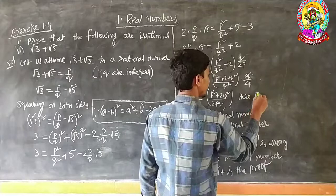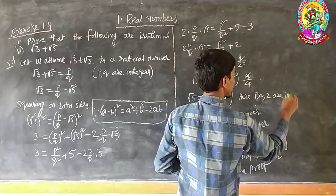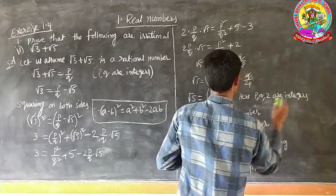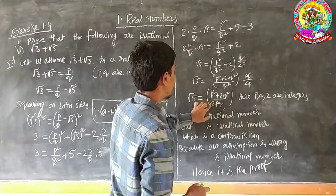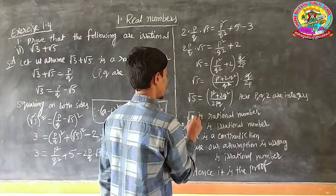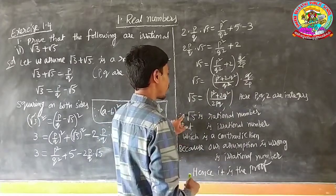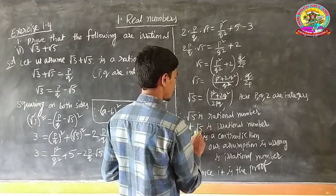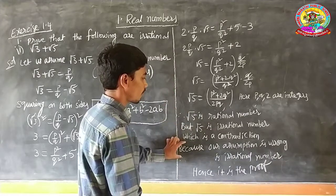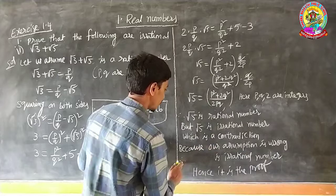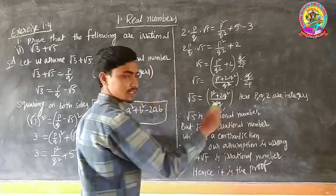Here P, Q, and 2 are integers. If these are all integers, the expression is rational, meaning root 5 would be rational. But root 5 is irrational — which is a contradiction because our assumption is wrong. Therefore root 3 plus root 5 is an irrational number. Hence it is the proof.